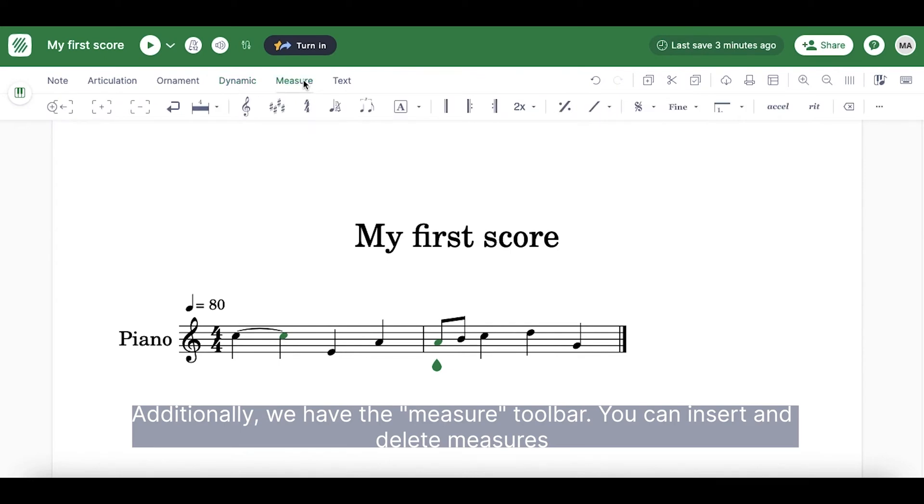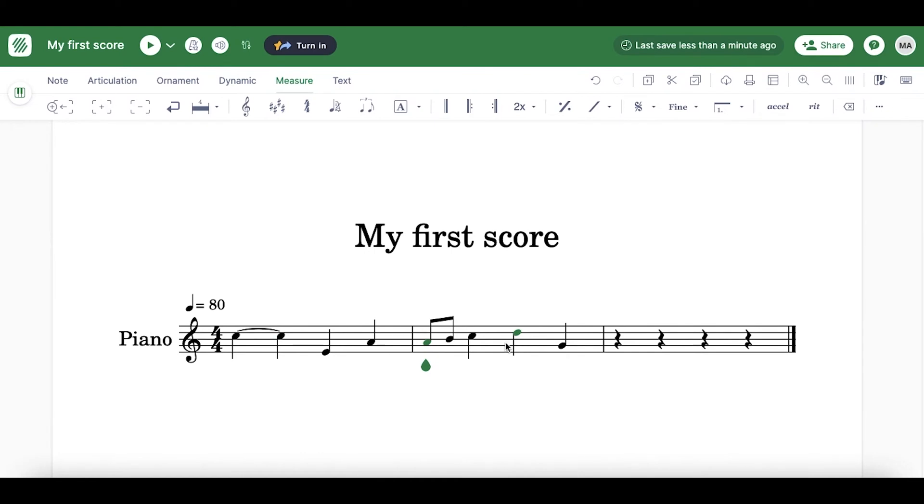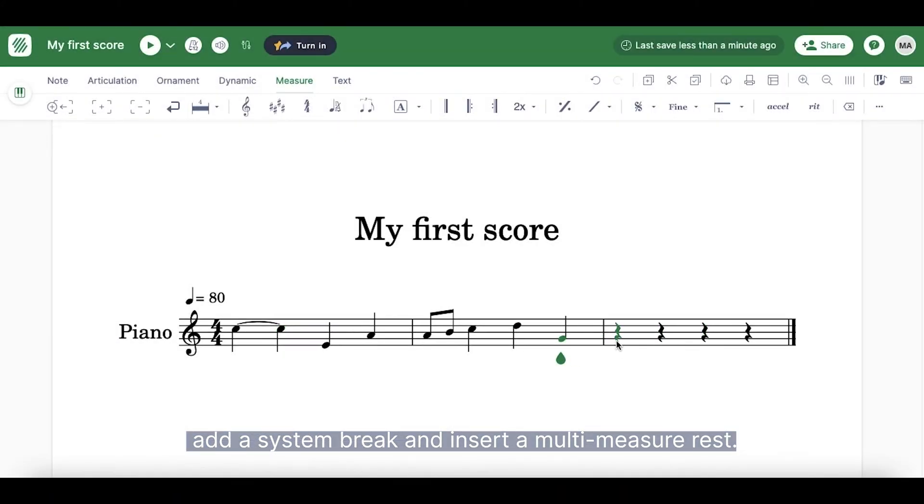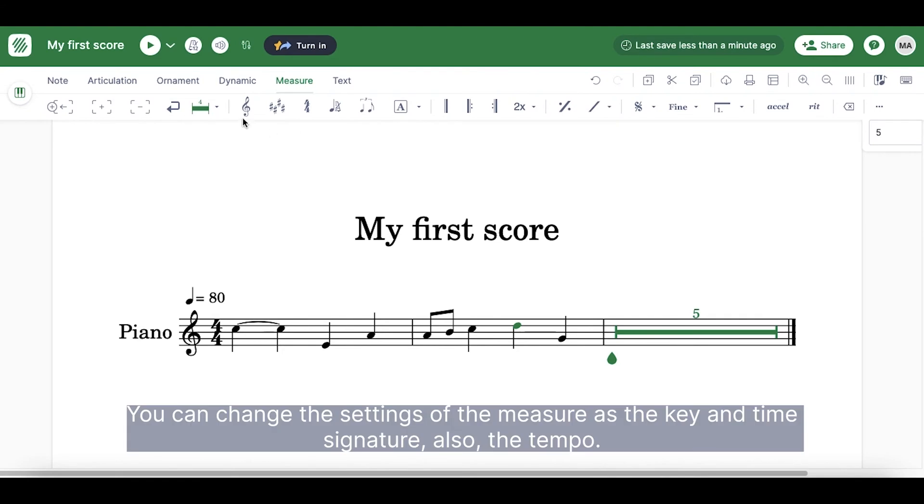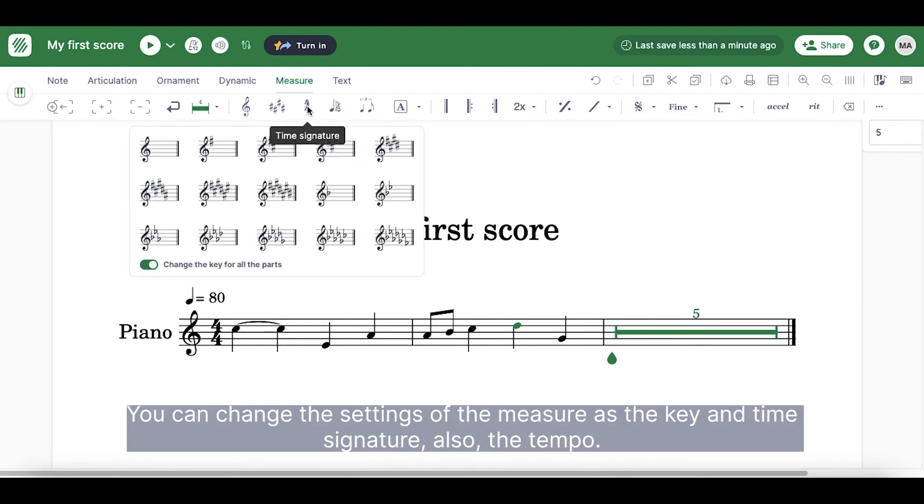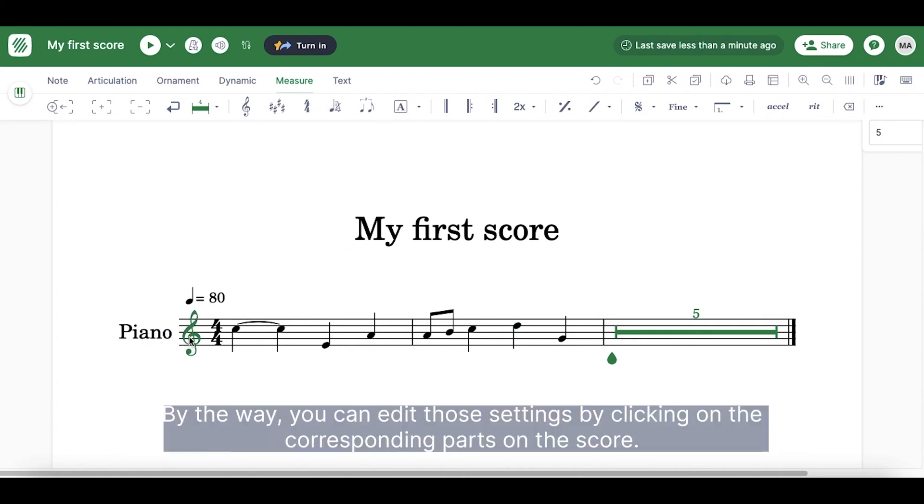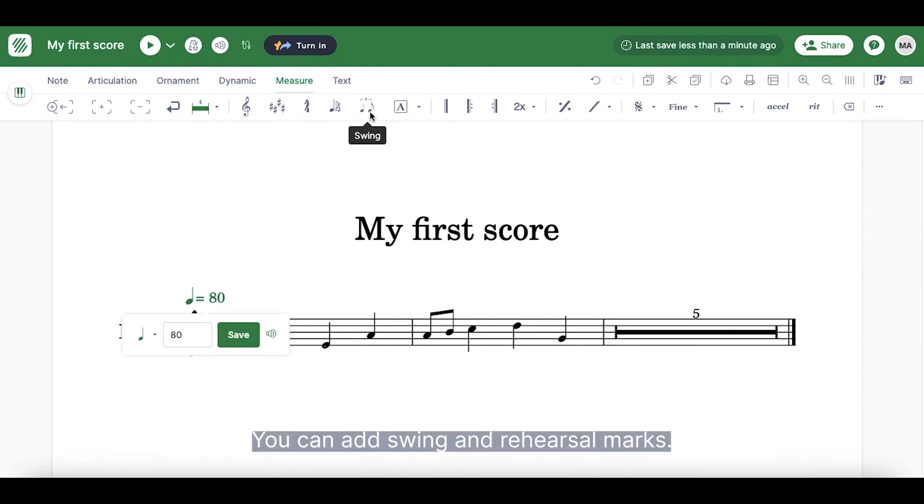Additionally, we have the Measure toolbar. You can insert and delete measures, add a system break and insert a multi-measure rest. You can change the settings of the measure as the key and the time signature, also the tempo. By the way, you can edit those settings by clicking on the corresponding parts on the score.